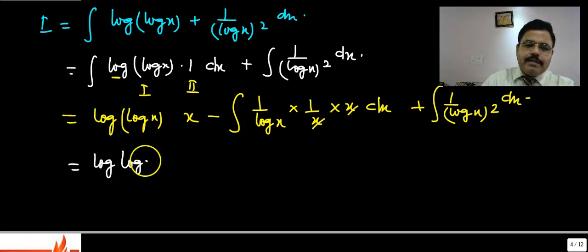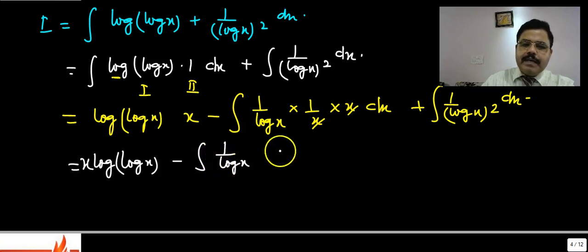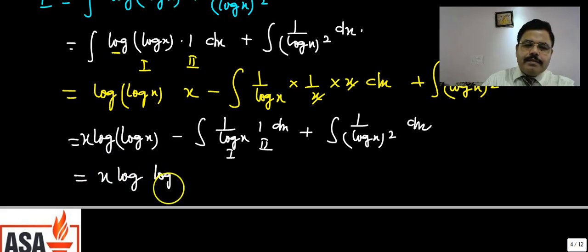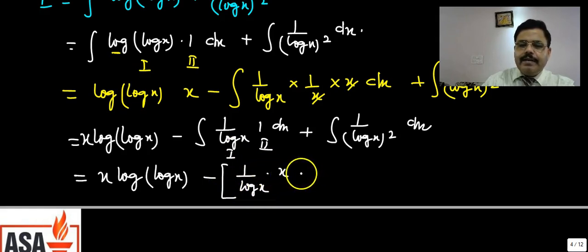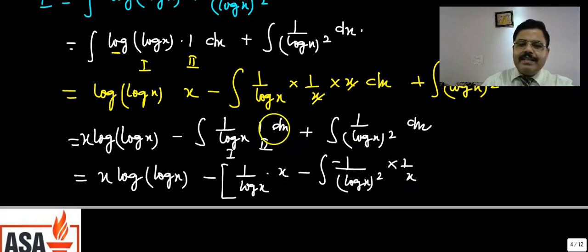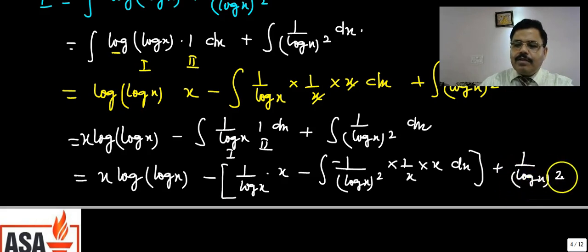So we have x·log(log x) minus ∫(1/log x) dx plus ∫[1/(log x)²] dx. Now apply integration by parts again on ∫(1/log x) dx. Treating 1/log x as first and 1 as second. First as it is: (1/log x)·x, minus integral of derivative of (1/log x) times x. Derivative of 1/log x = −1/(log x)²·(1/x). Multiplied by x gives −1/(log x)². So the integral becomes x/log x plus ∫[1/(log x)²] dx.